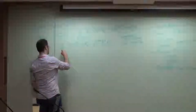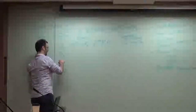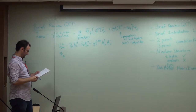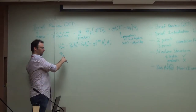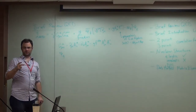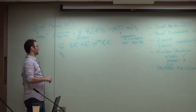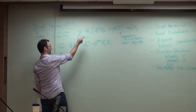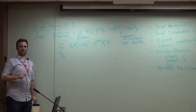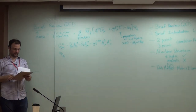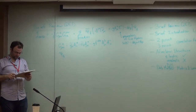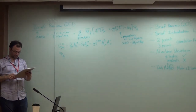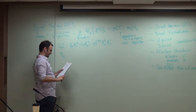The fermions come in multiple flavors: up, down, strange, charm, bottom, and top. For low energy physics we only use up, down, and sometimes strange. Top and bottom come in if we want to talk about flavor physics.